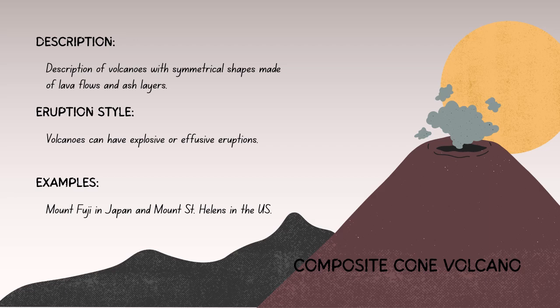Effusive eruptions contrast with explosive eruptions, where the magma is more viscous and contains significant amounts of gas, resulting in the ejection of volcanic ash, rocks, and gases into the atmosphere. The nature of an eruption — effusive or explosive — is influenced by magma composition, gas content, and the presence of tectonic plate boundaries. Effusive eruptions tend to be less violent and often produce lava flows that cover large areas over time, as seen in shield volcanoes — but stratovolcanoes have both types.